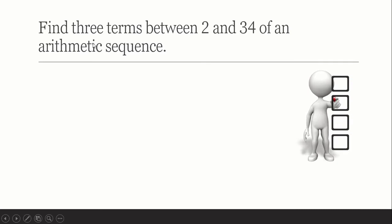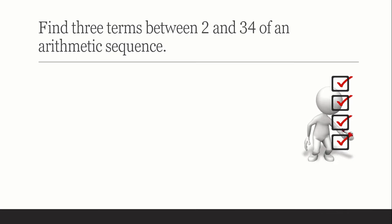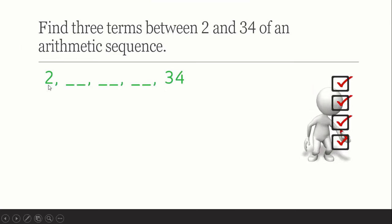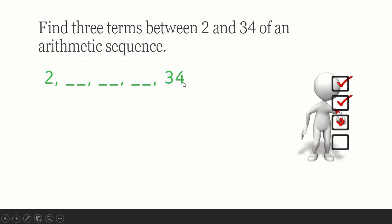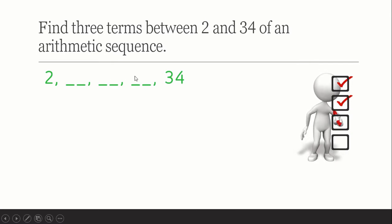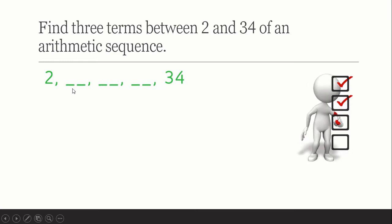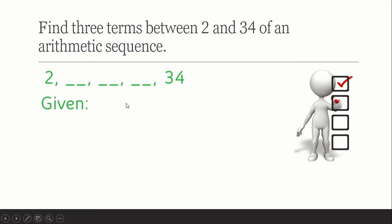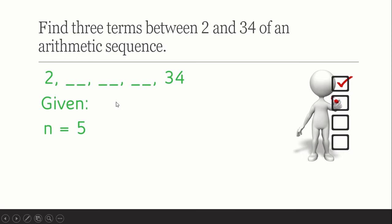Here's our first example on inserting arithmetic means between two non-consecutive terms. Find three terms between 2 and 34 of an arithmetic sequence. To do this, you're going to write a sequence starting from 2, then three spaces, then 34 — three spaces since you're going to insert three terms. After inserting three terms, how many terms are there in all in our sequence?